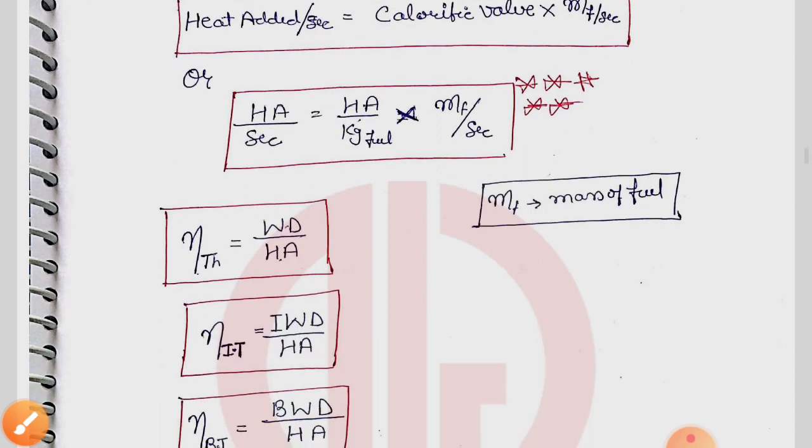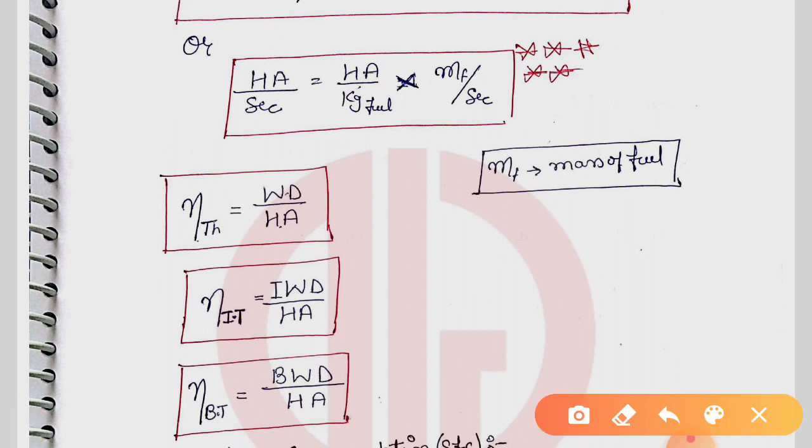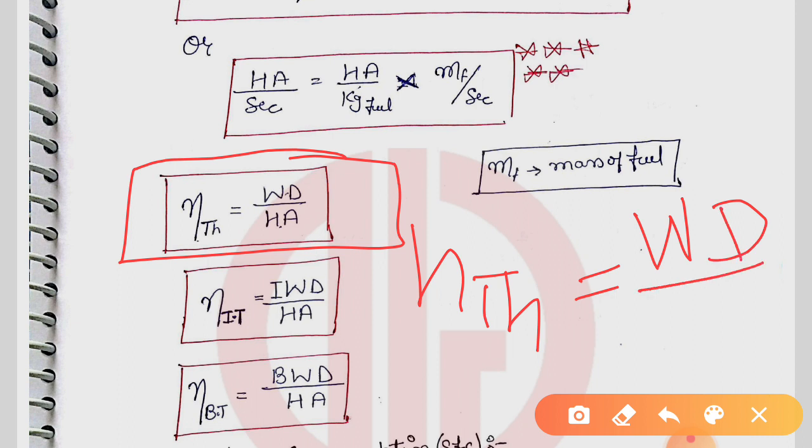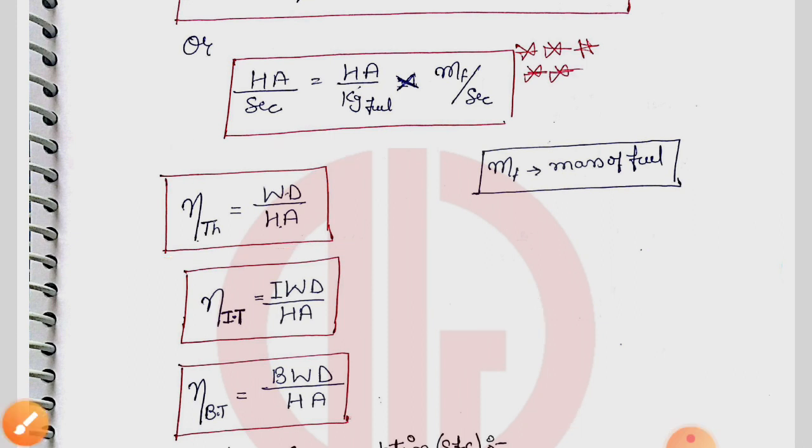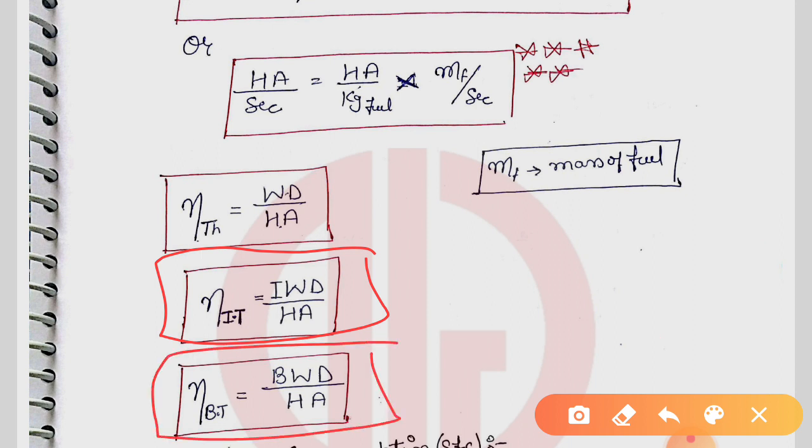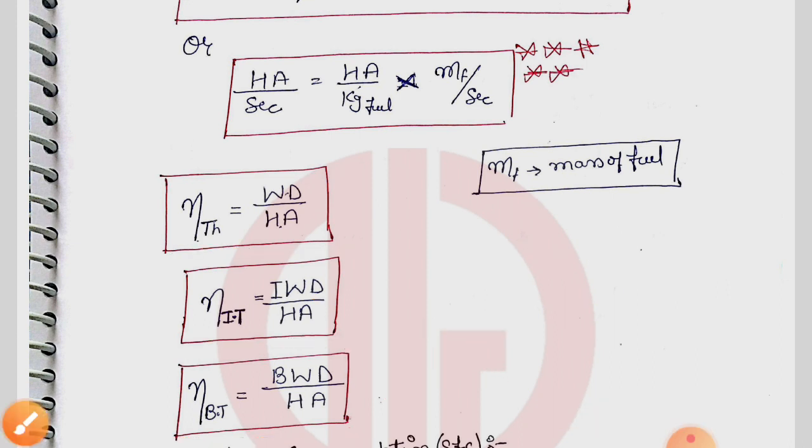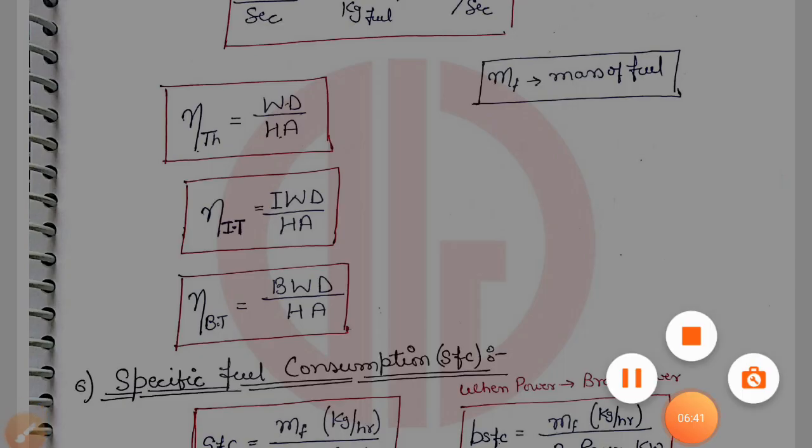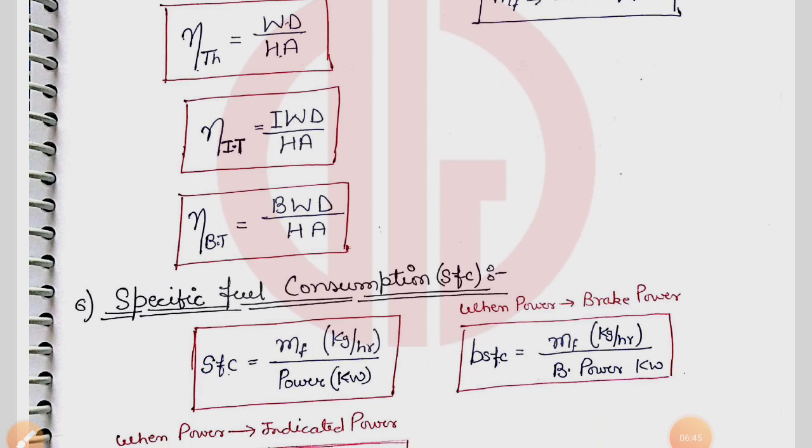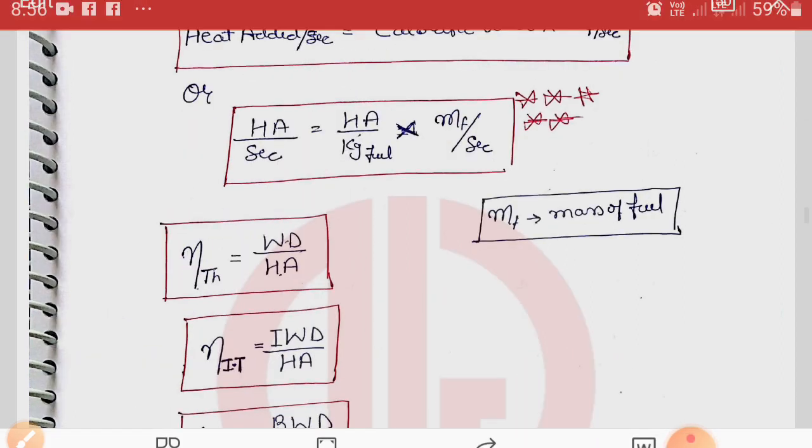If we talk about thermal efficiency, we have different thermal efficiencies. For the whole cycle, thermal efficiency is work done for a particular cycle divided by heat added. Similarly, indicated thermal efficiency is indicated work done divided by heat added, and brake thermal efficiency is brake work done divided by heat added.